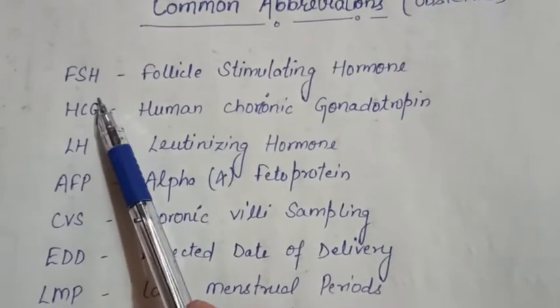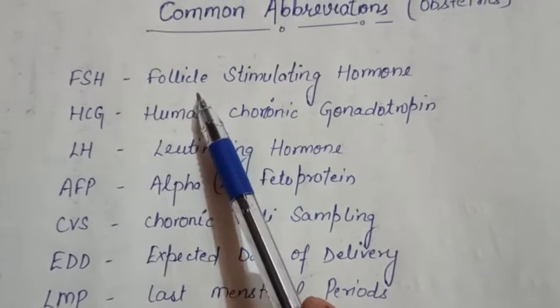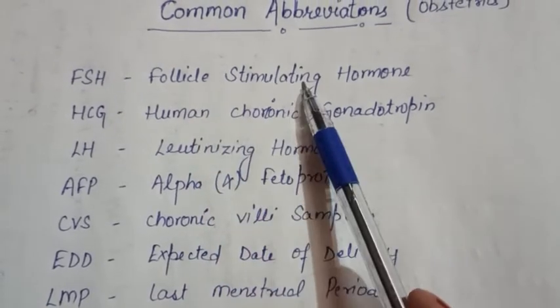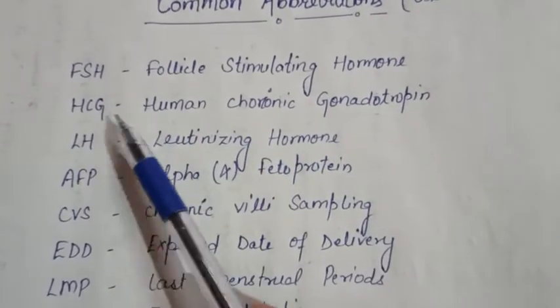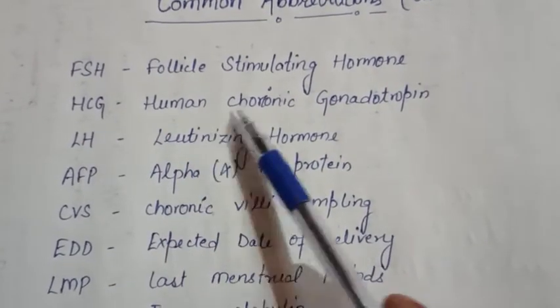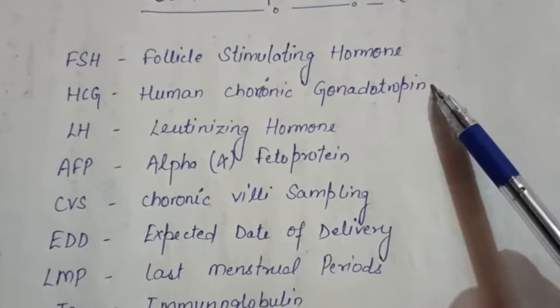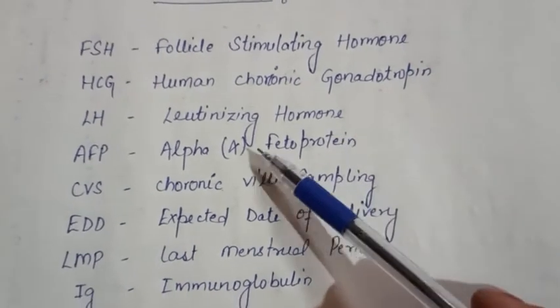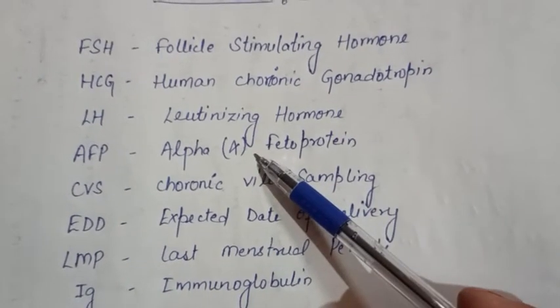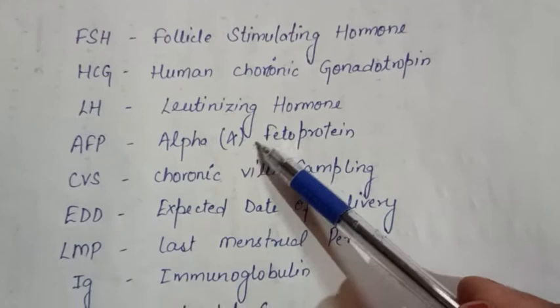First is FSH, that is follicle stimulating hormone. HCG is human chorionic gonadotropin. LH is luteinizing hormone. AFP is alpha-fetoprotein.